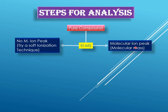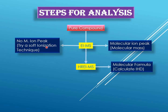However, in EIMS you may or may not get the molecular ion peak. If you get it, you have the molecular mass; if you don't, try a softer ionization technique where you will get the molecular ion peak. Once you have the molecular mass, the next step is to know the molecular formula, which can be obtained from high-resolution EIMS. Once you have the molecular formula, you can calculate the index of hydrogen deficiency or double bond equivalent to know the level of unsaturation.